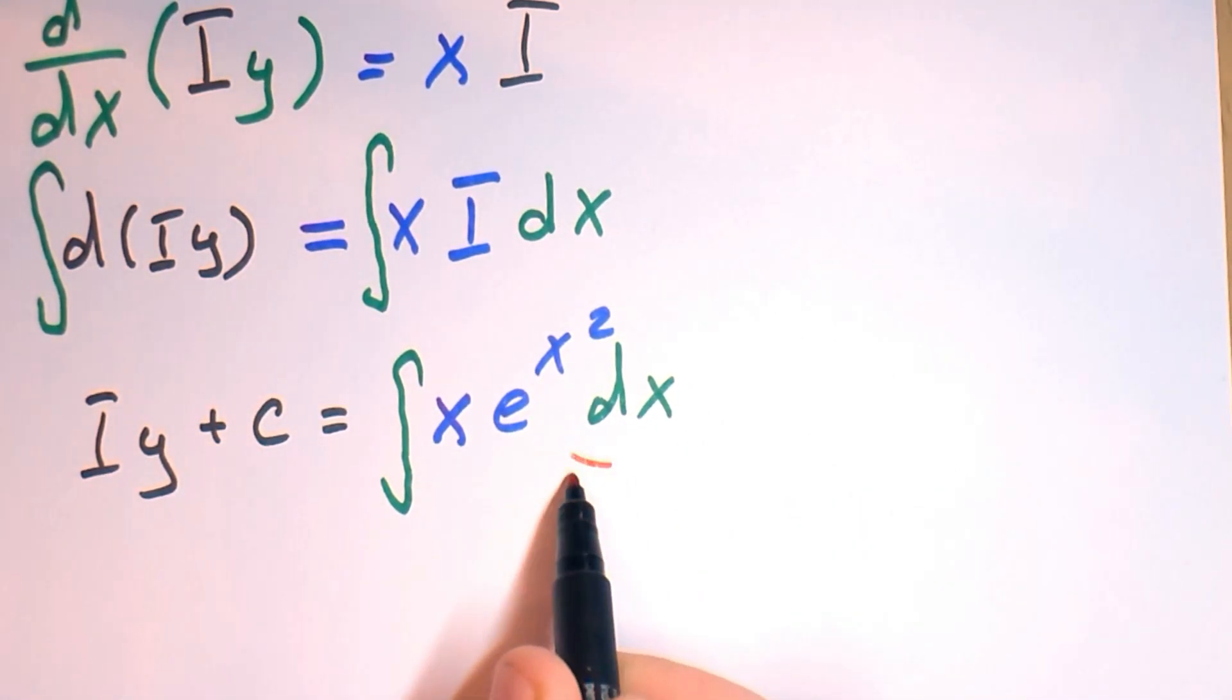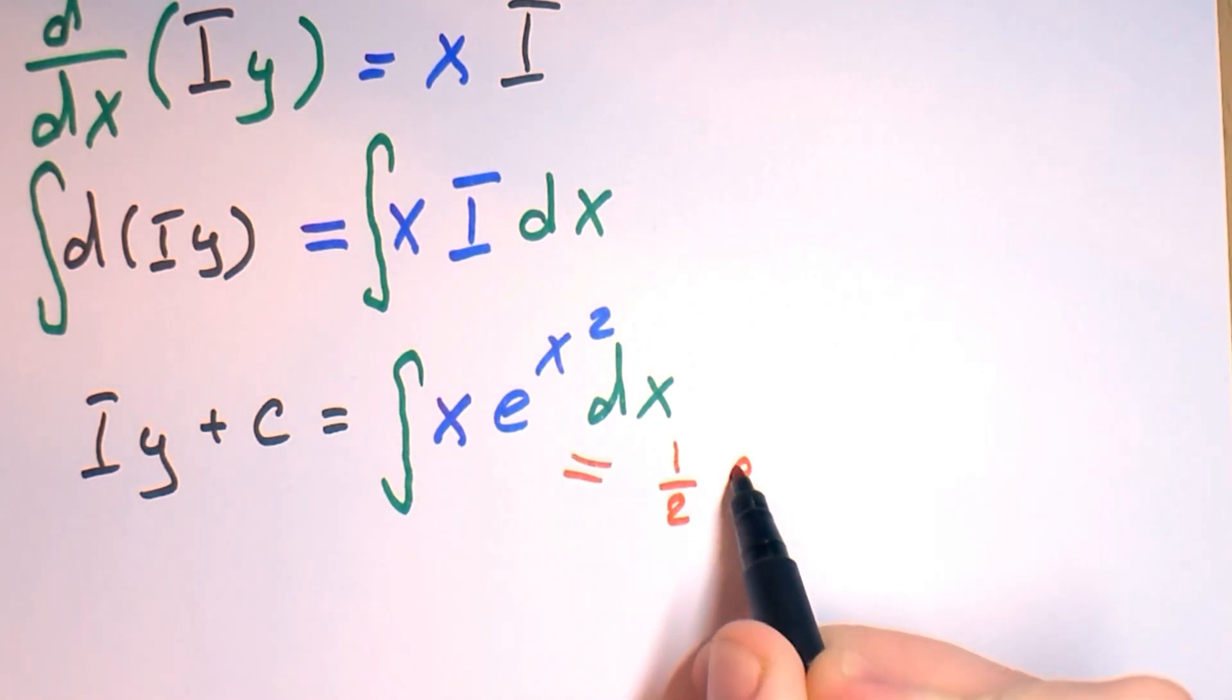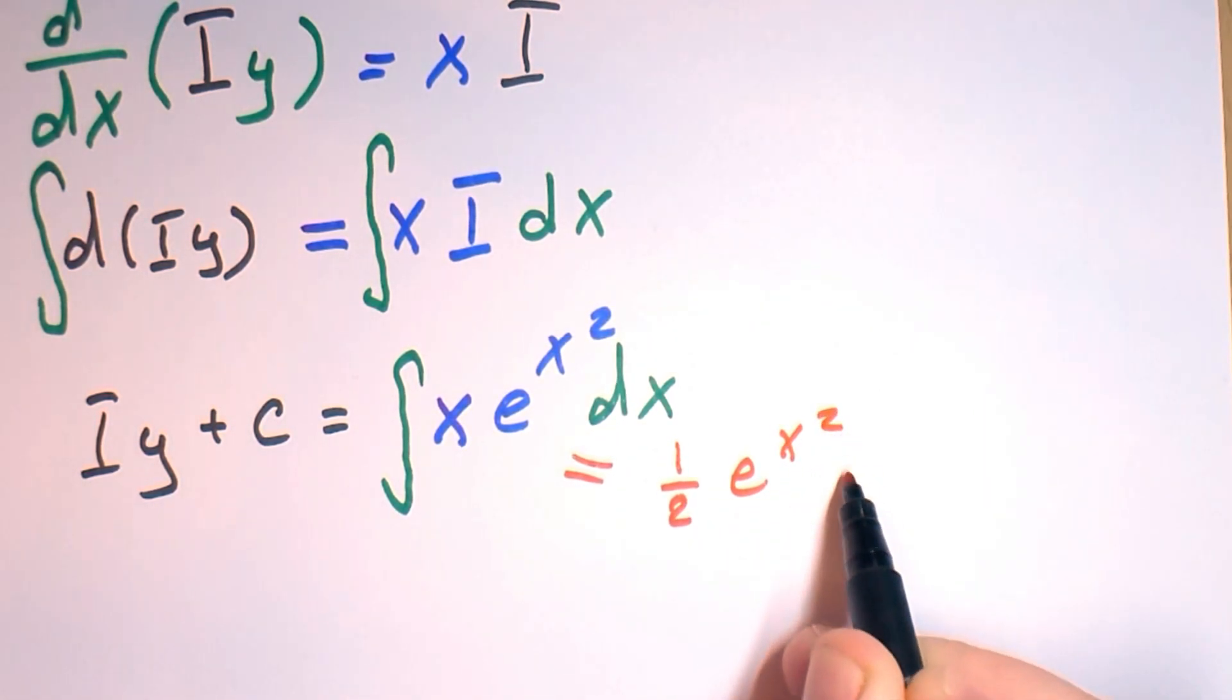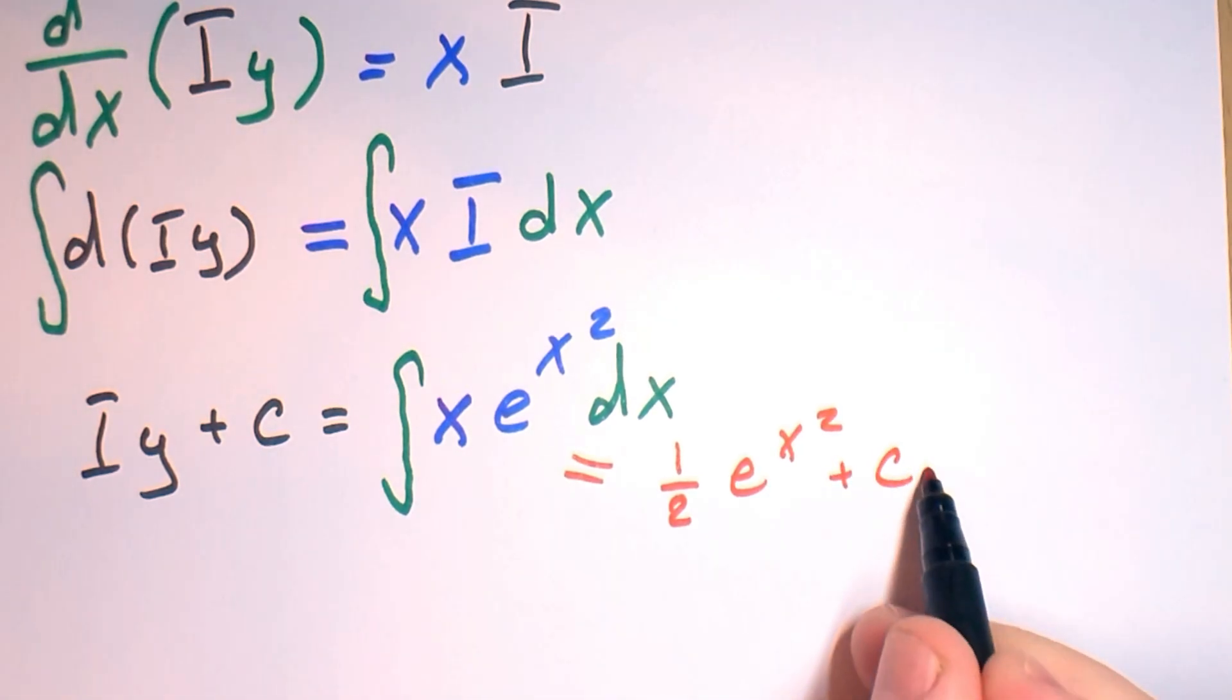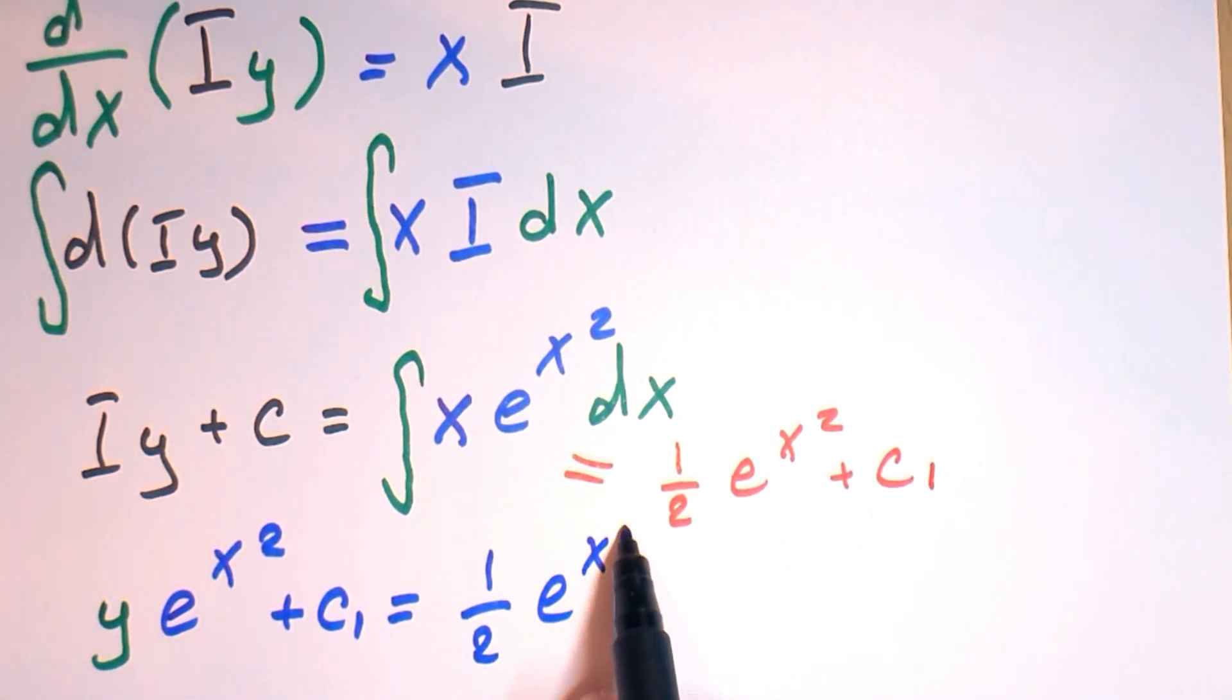And this integral equals one half times e to the power x squared. So if you substitute everything into one equation, y times e to the power x squared equals one half times e to the power x squared plus constant c.